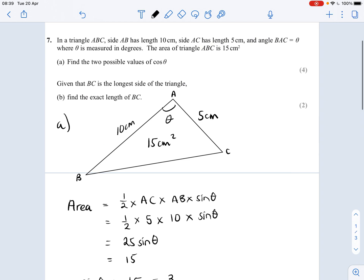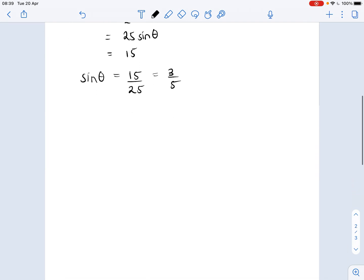Sine theta is 15 over 25, which simplifies to three-fifths. Now, we are asked to find the two possible values of cosine theta. Okay, so we've got sine theta, we want cosine theta.